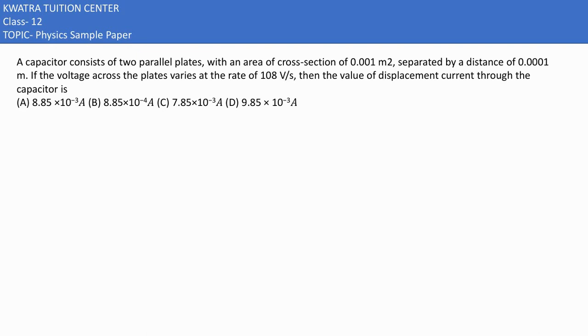So here in this case, a capacitor consists of two parallel plates. They are saying they have an area of cross section of 0.001 meter square, and they are separated by some distance. These parallel plate capacitors are separated by a small distance d.